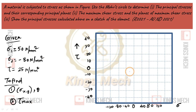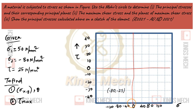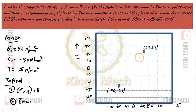In the Mohr's circle, we need 2 points. When you fix these 2 points on the circle diagram, you can construct the circle.